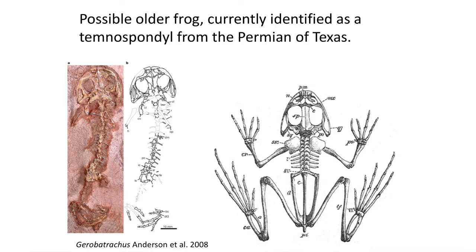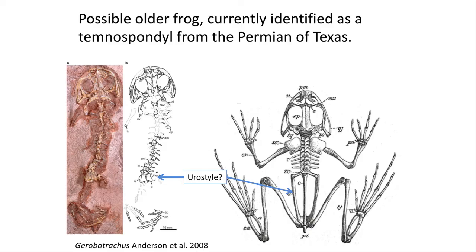Another intriguing early proto-frog has been found in the Permian of Texas called Gerobatrachus. It's sometimes classified as a Temnospondylan but does have some characteristics comparable to frogs, including a broad rounded skull. However, it lacks reduced vertebrae, and the pelvis is not well preserved to confirm a urostyle, and a few vertebrae are found in the tail. So this fossil might be a close ancestor to frogs, but until a better specimen with a urostyle is found, it will likely remain in the Temnospondylan group.